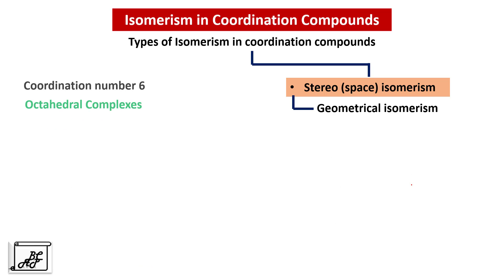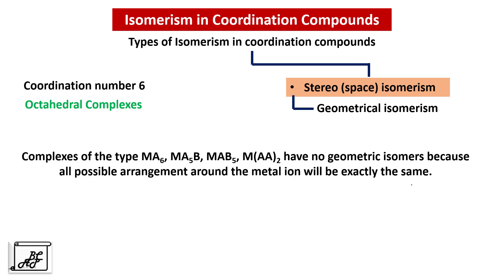Next, we move to coordination number 6. In this case the geometry of a complex is octahedral. We must remember that complexes of the type MA6, MA5B, MAB5, or MAA2 (where AA is a bidentate ligand with similar atoms at both ends) have no geometrical isomers, because all possible arrangements around the metal ion will be exactly the same.